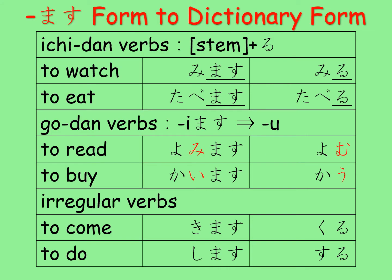This table shows you how to change verbs from the マス form to their dictionary form. If the verb is an イチダン verb, you swap マス with ル。 If the verb is a ゴダン verb, you change the イ-sounding letter before マス into the ウ-sounding letter of the same column — the same consonant.